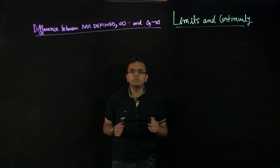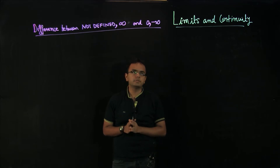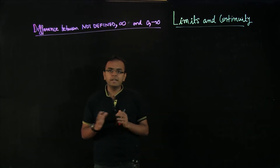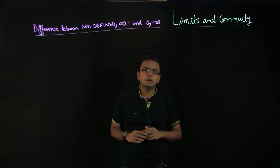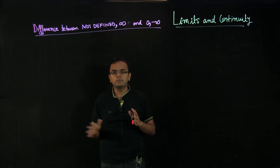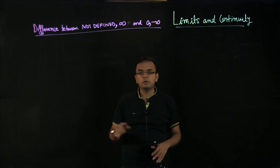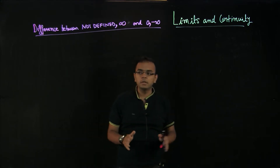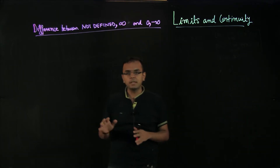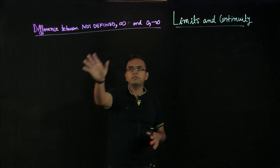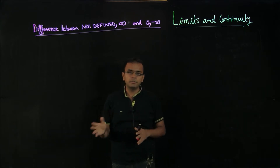Hi everyone, welcome to this short topic about the difference between not defined, infinity, 0, and approaching 0 for the limits and continuity chapter. The idea behind this video is to emphasize the difference between these four things. From my experience, I have seen that students often get confused between them, and because of this confusion it leads to a lot of problems when solving problems related to limits and continuity.